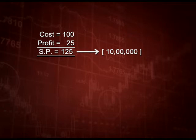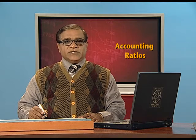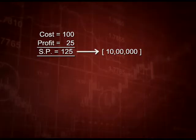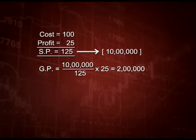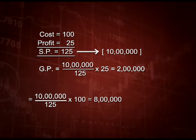This selling price of 125 is given as 10 lakh. So if 10 lakh is 125 percent, what is 25 percent? We can calculate it by unitary method: 10 lakh divided by 125 into 25, which gives us 2 lakh as gross profit. And if you are asked cost of goods sold, then divide 10 lakh by 125 and multiply by 100 — that gives you 8 lakh rupees.